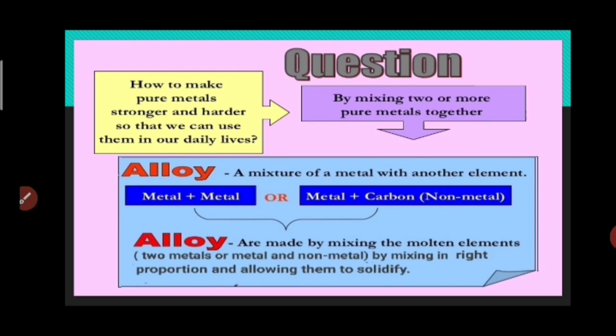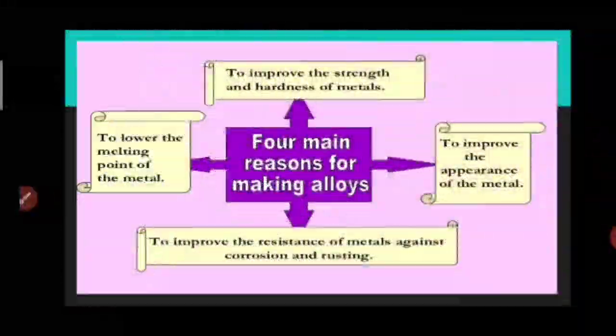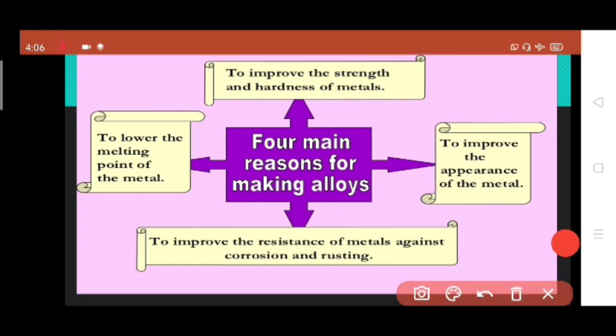But what is the need of making alloys? Let's know it. There are four main reasons for making alloys. First is to improve the strength and hardness of metals. Second is to improve the appearance of the metal. Third is to improve the resistance of metals against corrosion and rusting, because often they come in contact with the moist air. And the fourth reason is to lower the melting point of the metals.